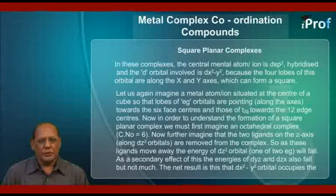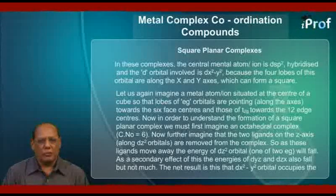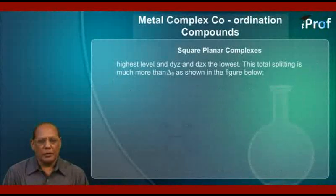So, as these ligands move away, the energy of the dz² orbital — that is one of the two eg — will fall. As a secondary effect of this, the energies of dyz and dzx also fall, but not much. The net result is that dx²-y² orbital occupies the highest energy level and dyz and dzx the lowest.